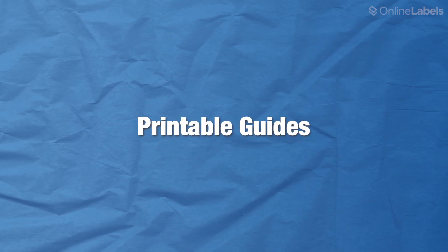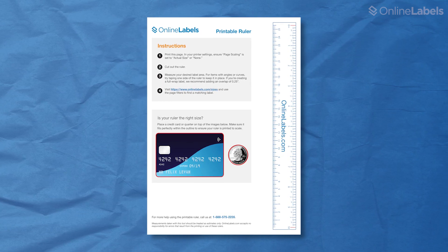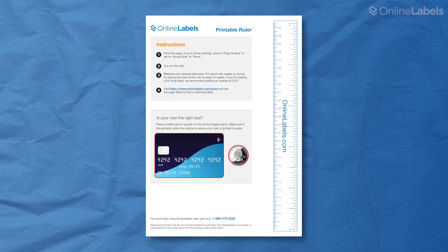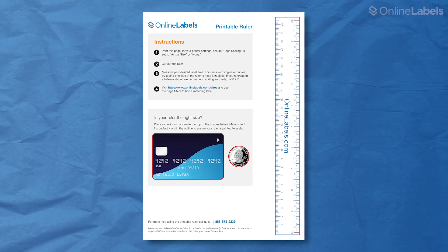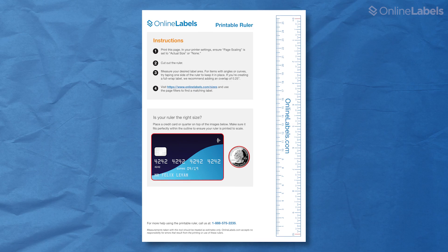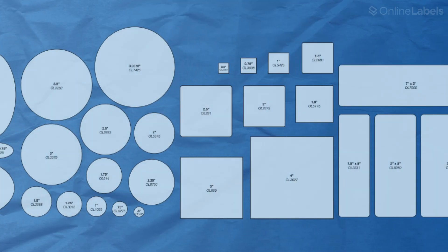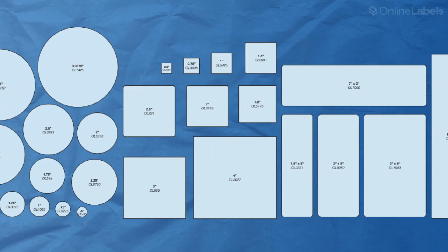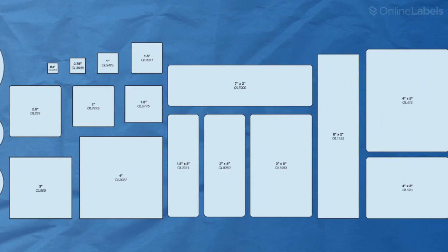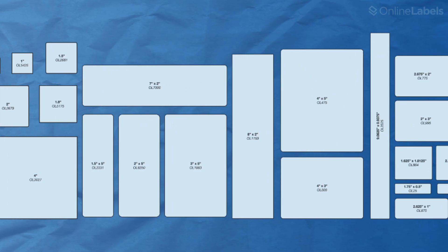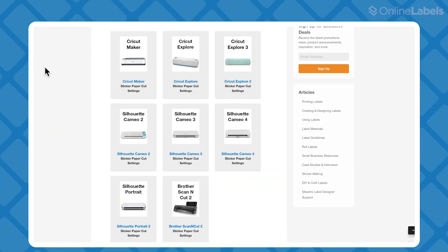We offer printable guides too — these are a surefire way to help you find the perfect label size for your products or project. Our printable ruler is perfect for anyone in need of a flexible, portable, and easy-to-use measuring tool, which comes in handy for round and curved containers. Just download, print, and cut out the ruler. Our free size guides feature the most common sizes for each of our label shapes, helping you determine which size and shape sticker will best fit your product. These printable guides remove the guesswork and let you order exactly what you need with no risk.